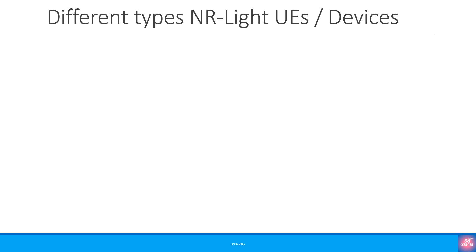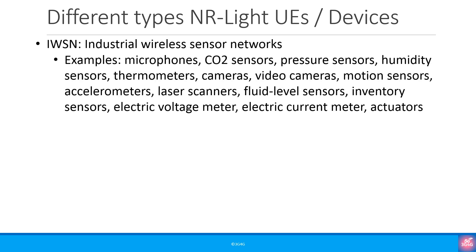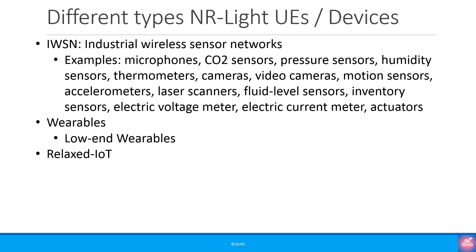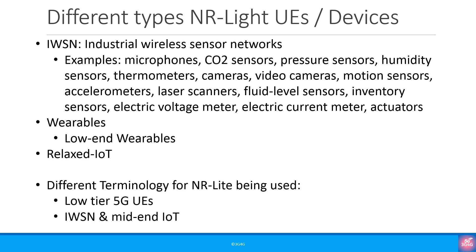What are the different types of NR Light UEs or devices? The first is IWSN, or Industrial Wireless Sensor Networks. Examples include microphones, carbon dioxide sensors, pressure sensors, humidity sensors, thermometers, and video cameras. Also included are wearables — sometimes very low-end wearables — and relaxed IoT. The different terminology for NR Light being used in studies includes low-tier 5G UEs, IWSN, and mid-end IoT.